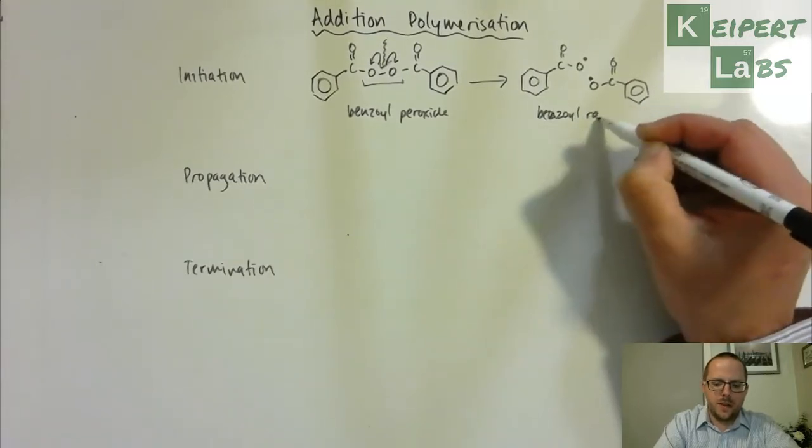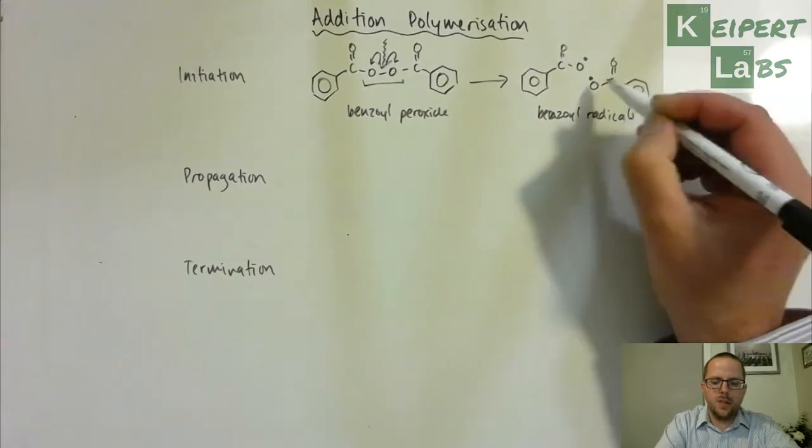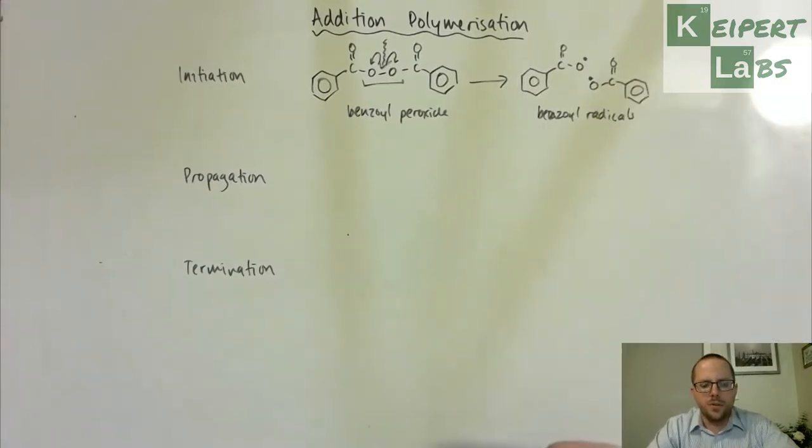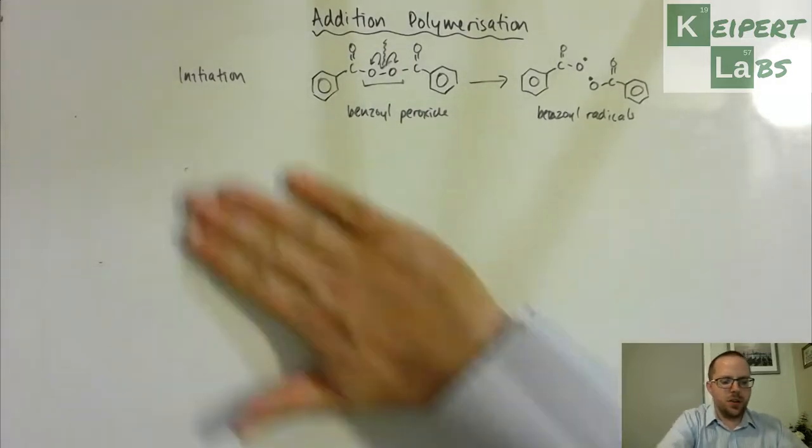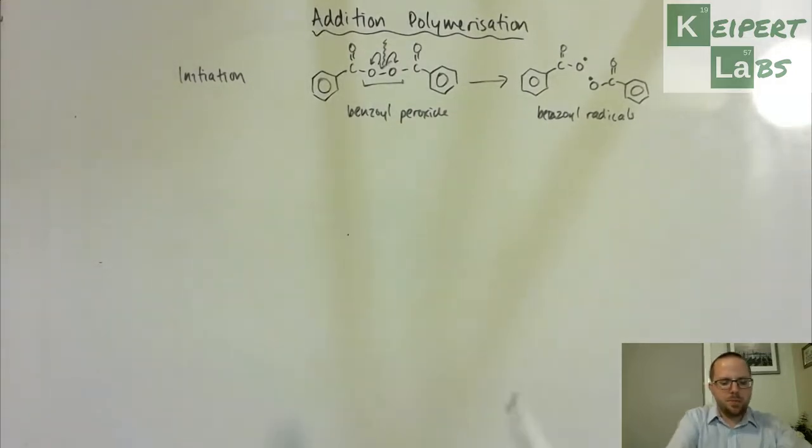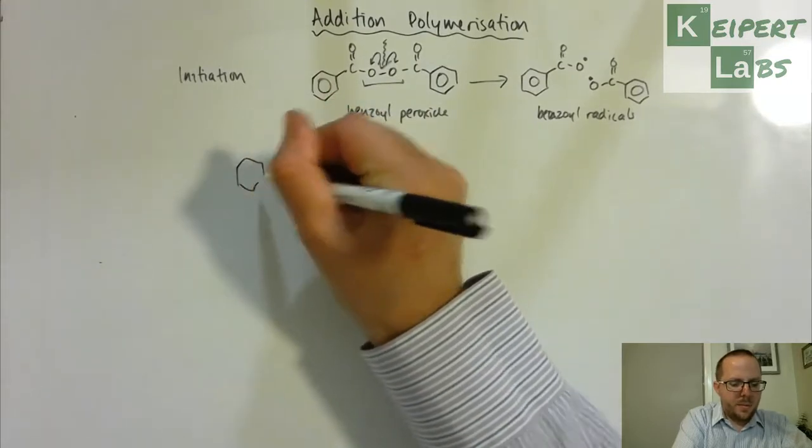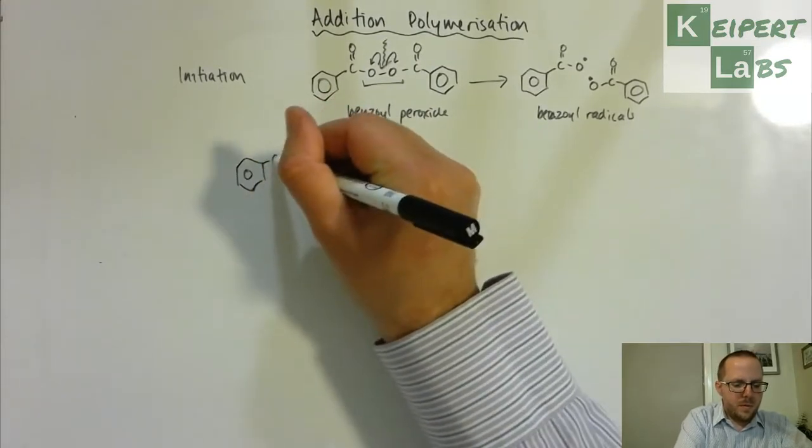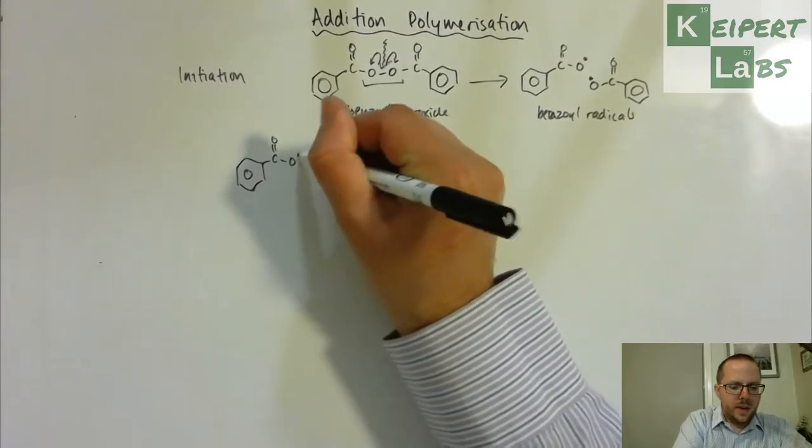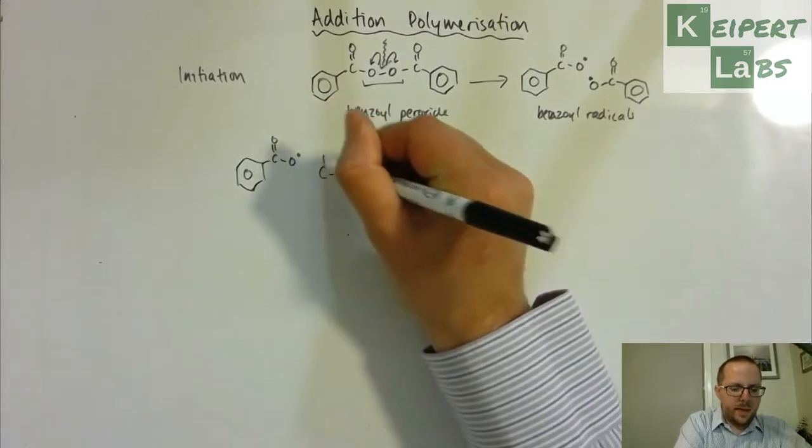So you can see that's unpaired electrons present on the oxygens here which is crucial to the next stage of the process. I'll just clear that off a little bit so we've got some more room. What happens then is that our benzoyl peroxide radical encounters an alkene molecule like ethylene.